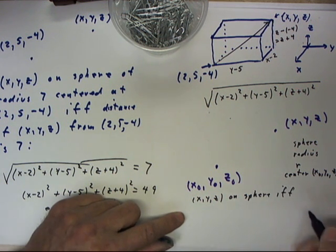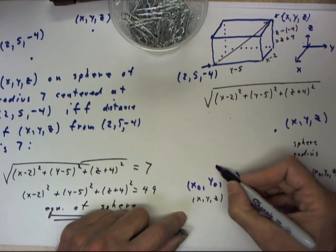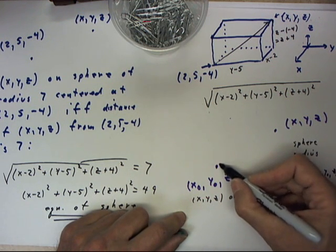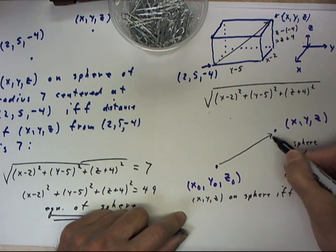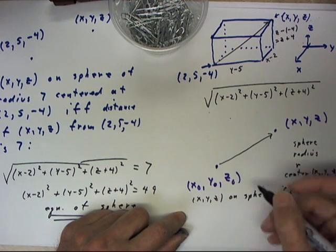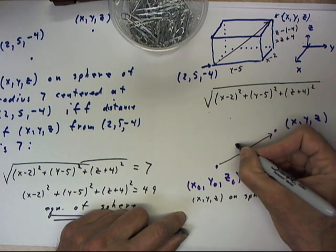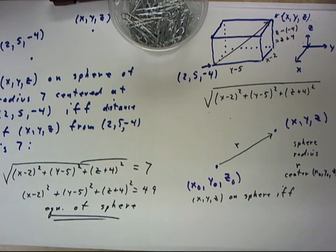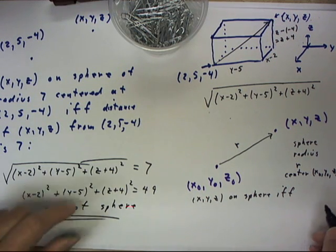if and only if the distance from x0, y0, z0 to x, y, z, which we could represent as the magnitude of this vector, equals R.